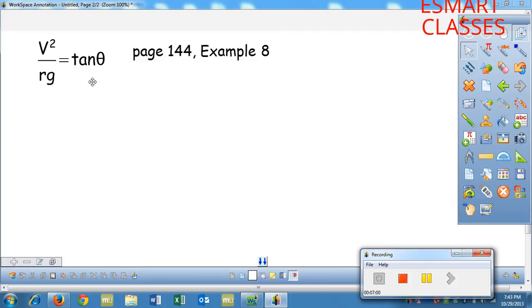Here we are on a new page. We've got our formula, v squared over rg equals tan theta. And we're going to do example eight on page 144. If you need to pause it to go get your book, go ahead.